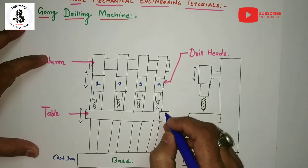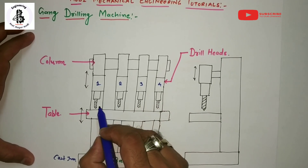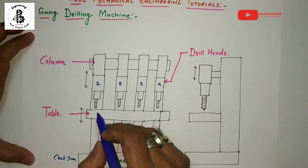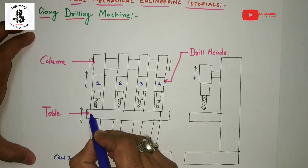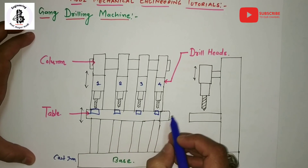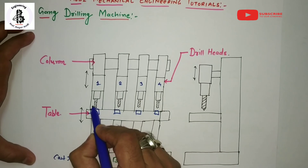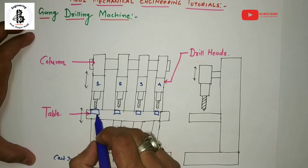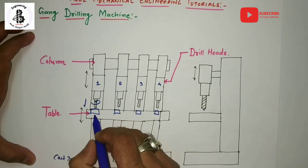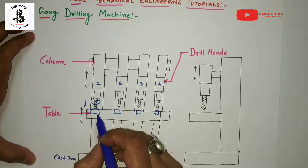You can easily control the speed of each spindle separately. The parameters — speed, feed, and depth of cut — are controlled independently for each spindle. Depending on the workpiece material and the operations being performed, you control the separate speed, feed, and the required depth of cut for each spindle.